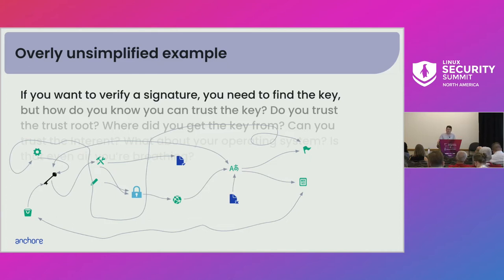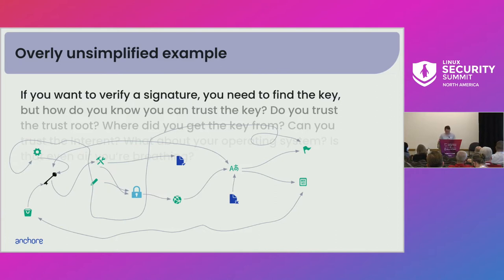What ends up happening when you have a problem that looks too complex is people just don't do it because they say it's too hard, and they give up. We see this in security all the time — we'll tell people they need to scan their product for vulnerabilities, they do, they get 7,000 results, and the developers say I'm never talking to you again. Because we're doing this to them. It totally happens.